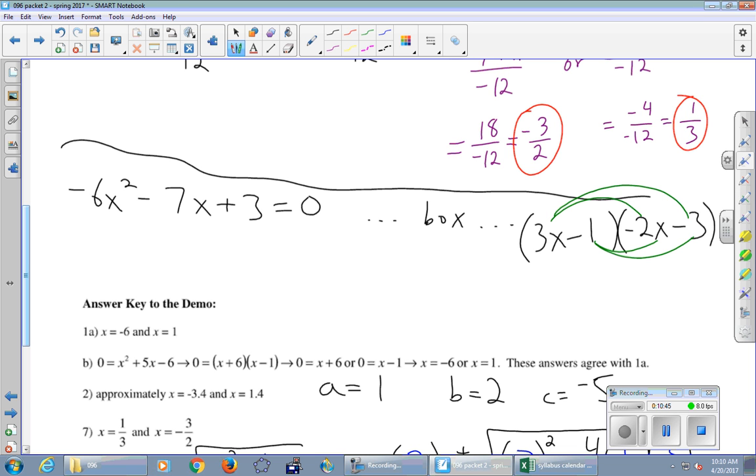-6X²—that's good, that's what I was after. Outers: -9X. Inners: +2X. And then finally last: +3. And you can combine these two terms in the middle and get -7X. So did I factor this thing over there correctly? I did.